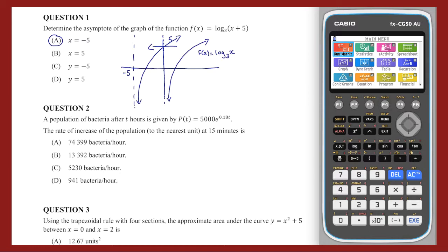Question 2. The rate of increase of the population after 15 minutes is the derivative value of p(t) when t equals 0.25, as t is measured in hours. By applying the laws of differentiation and substituting,